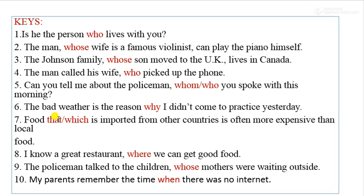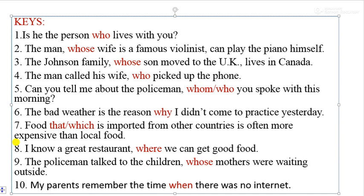Number seven continued: 'Food which is imported from other countries is often more expensive than local food.' Number eight: 'I knew a great restaurant — it's a place where we can get good food.' Number nine: 'The policeman talked to the children whose mothers were waiting outside.' We use 'whose' because it means 'their mothers' — showing possession.